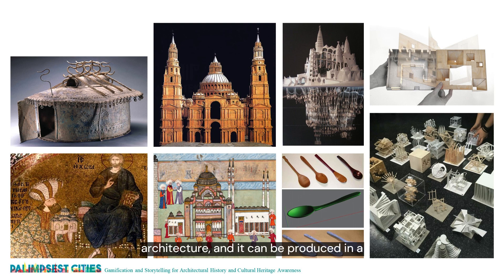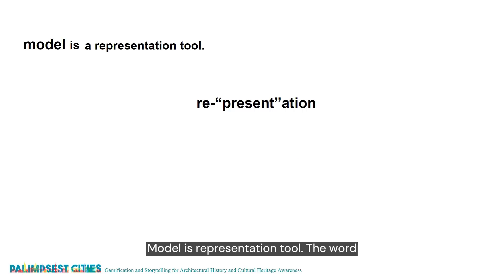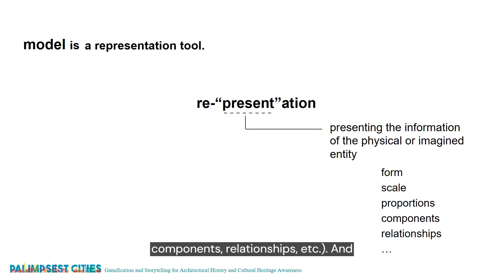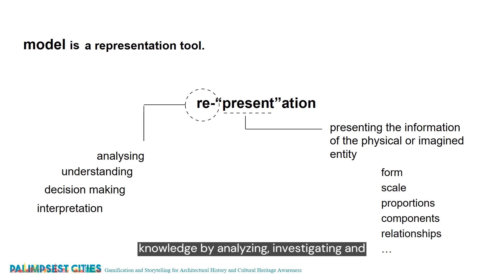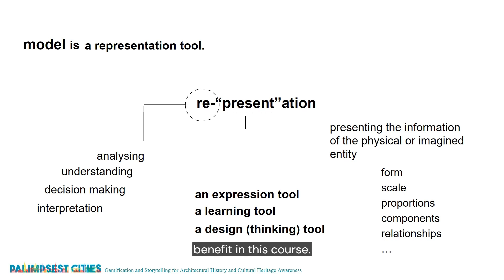A model can be produced in a wide range of conventional or experimental materials, and of course in advanced virtual technologies. A model is a representation tool. The word representation is a combination of two things: to present, as in presenting an entity's knowledge — its form, scale, components, relationships, etc. — and re, as in repetition or reproduction, referring to the interpretation of that knowledge by analyzing, investigating and understanding. The combination of these two makes the model a very rich learning, thinking and design tool, which we want to benefit from in this course.